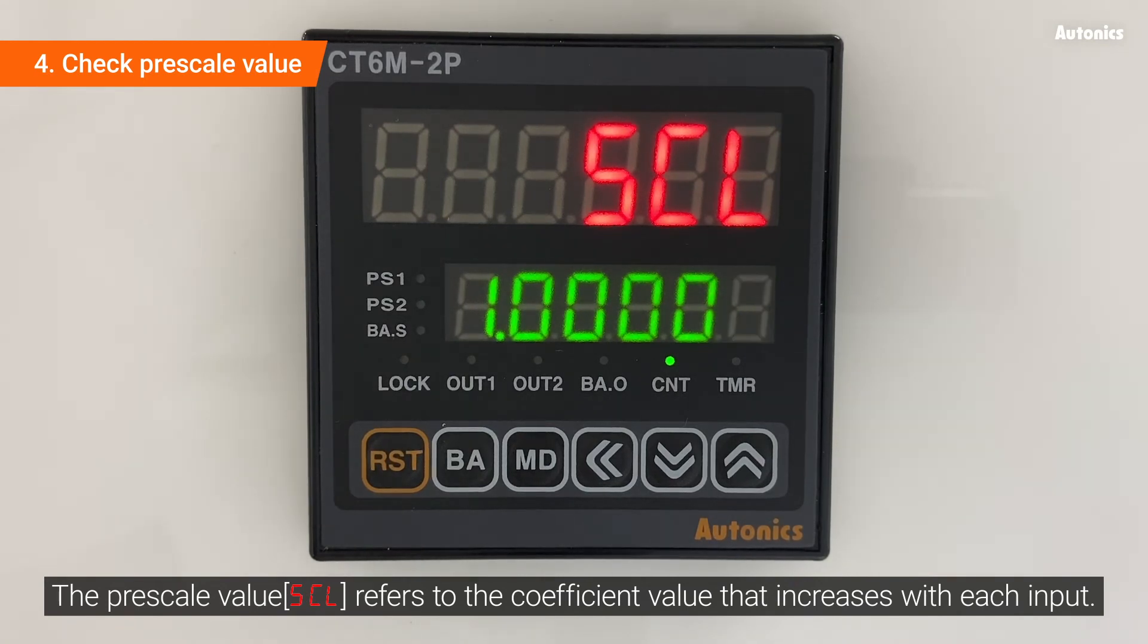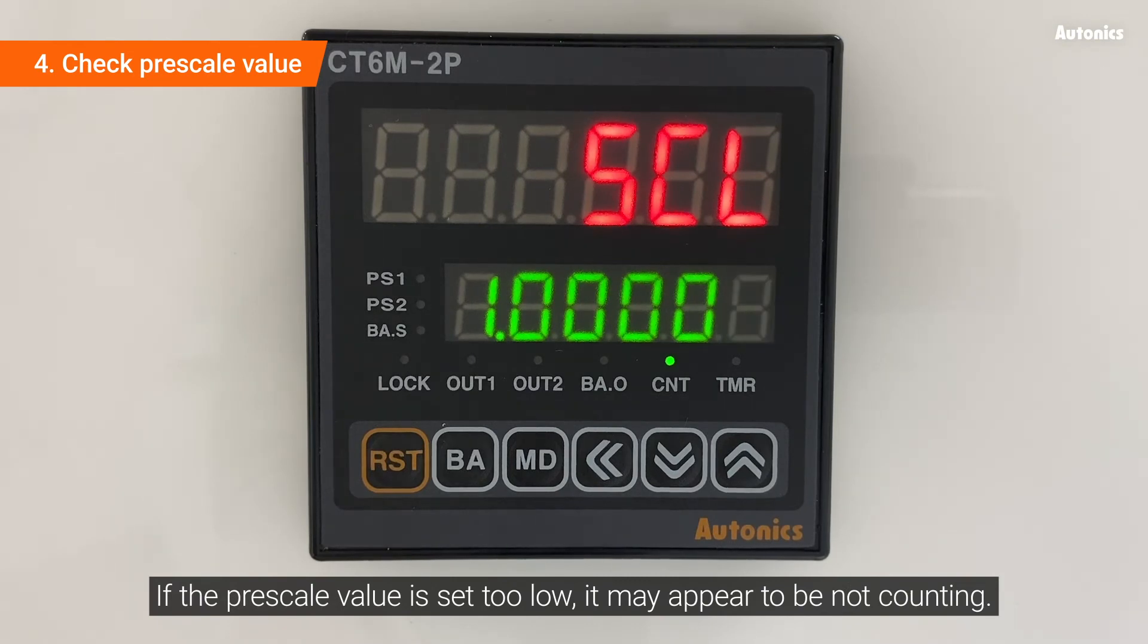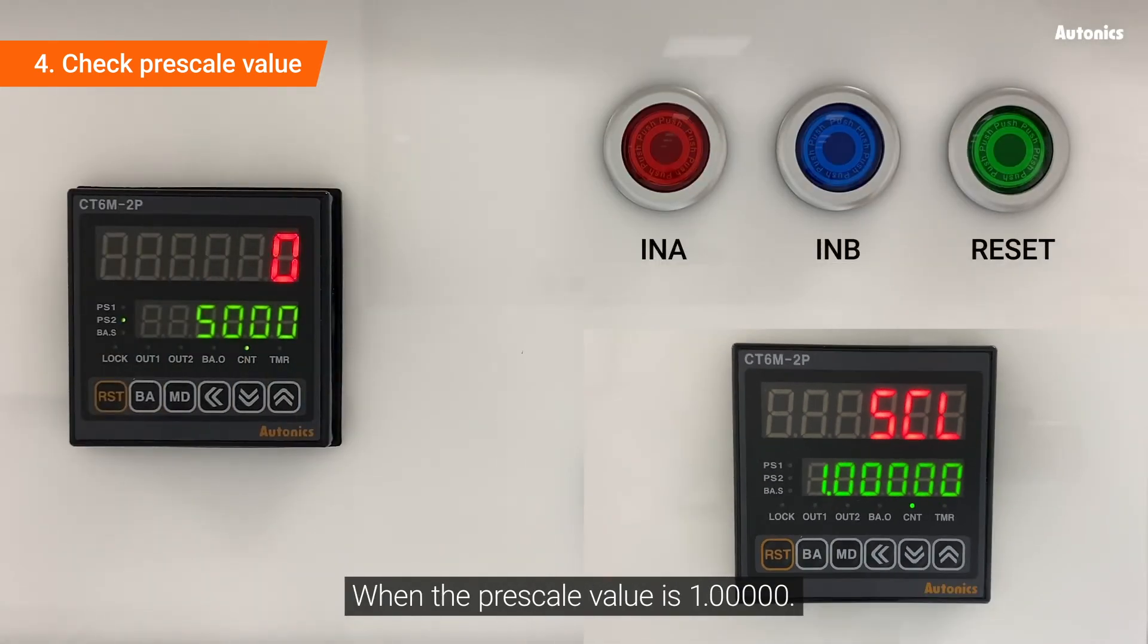If the pre-scale value SCL is set too low, it may appear to be not counting. When the pre-scale value SCL is 1, counting operates normally.